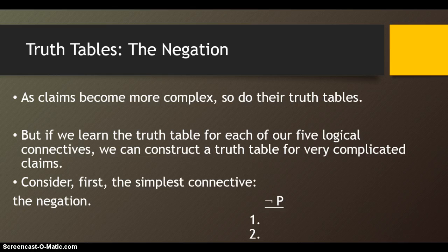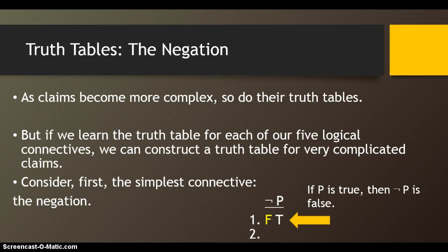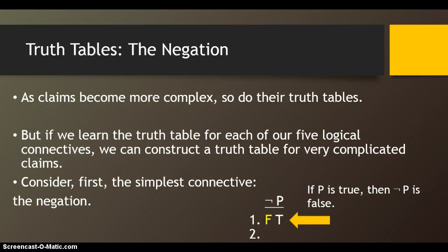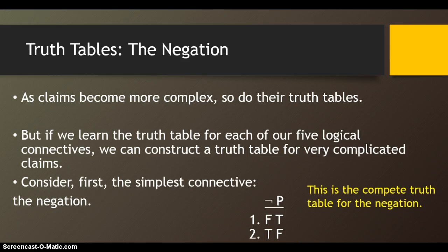As claims become more complex, so do their truth tables. But if we learn the truth table for each of our five logical connectives, we can construct a truth table for very complicated claims. Consider first the simple connective, the negation. If P is true, then not-P is false. The negation flips the truth value of any particular claim to its opposite. So if P is false, then not-P is true. This is the complete truth table for the negation.